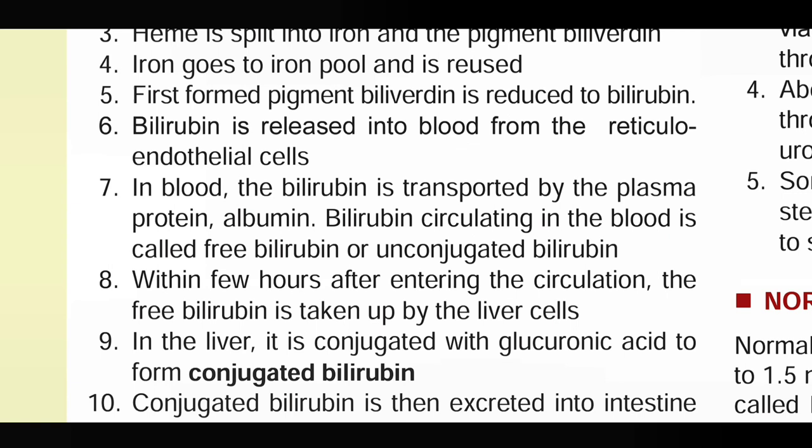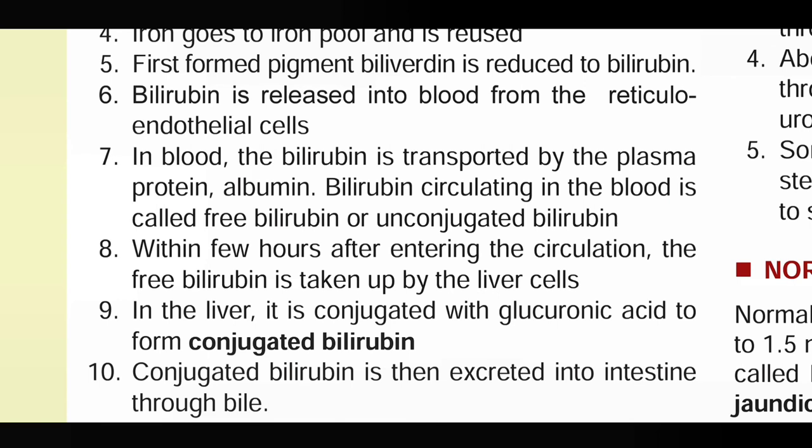Bilirubin is released into the blood from the reticuloendothelial cells. In the blood, bilirubin is transported by the plasma protein albumin. The bilirubin circulating in the blood is called free bilirubin or unconjugated bilirubin.